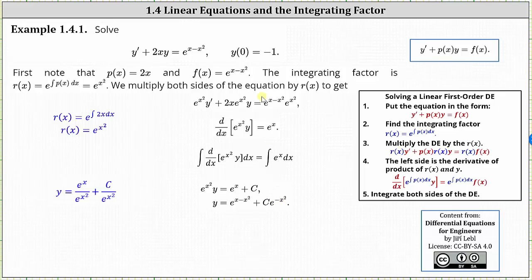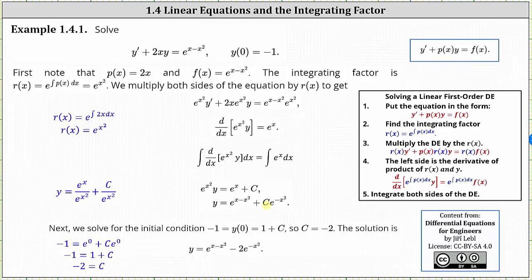Now we use the initial condition y of zero equals negative one to determine the constant c. Performing the substitution, shown in blue on the left, we have negative one equals e to the power of zero plus c times e to the power of zero. Simplifying, negative one equals one plus c, and therefore c equals negative two.